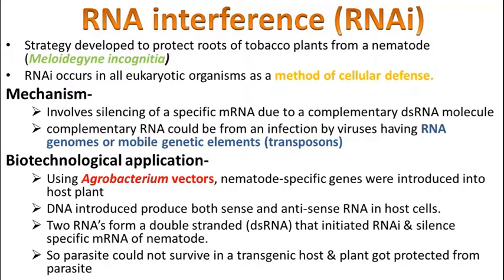These two RNAs together initiate RNAi — RNA interference — and silence the specific nematode mRNA. The sense and antisense RNA bind to the nematode mRNA from outside. The mRNA coils up and cannot be opened for translation. Without translation, the virus or bacteria cannot produce its proteins, and any foreign element in plant or animal cells can be silenced.